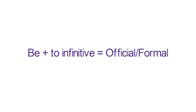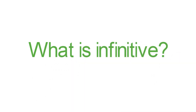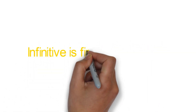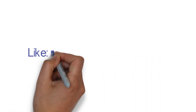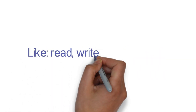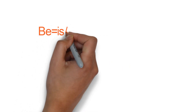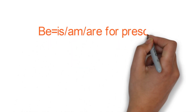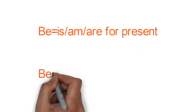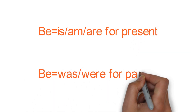But first of all, what is an infinitive? Infinitive is the first form of a verb, like read, write, play, meet, etc. Be is equal to is, am, or are for present, and was or were for past.